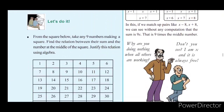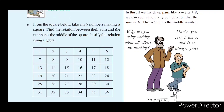Let's do it. We are going to talk about this question — a request. From the square below, take any 4 numbers making a square. You can select 9 numbers in this box. Find the relation between their sum and the number at the middle of the square.